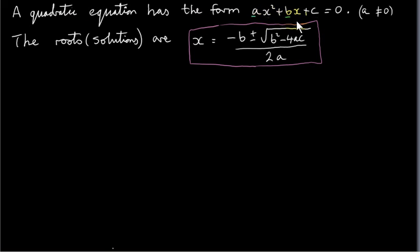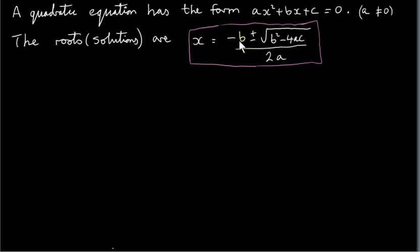The letters a, b and c are normally given to us — we normally know what they are. Letters from the start of the alphabet stand for given values usually. x is unknown; we're often looking for x, the values of x that satisfy this equation. x is a letter from the end of the alphabet. Now the roots, or in other words solutions, are x equals minus b plus or minus the square root of b squared minus 4ac, all over 2a.